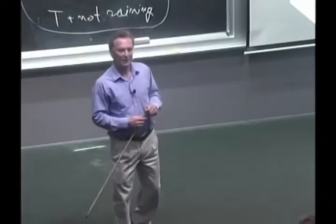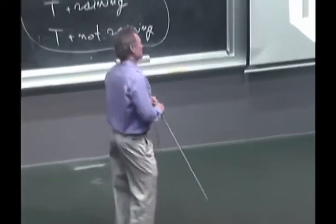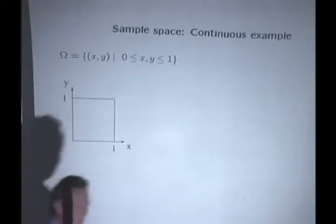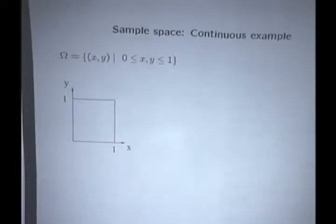There's infinitely many real numbers. There's infinitely many points in the square. So this is an example in which our sample space is an infinite set. We're going to revisit this example a little later.